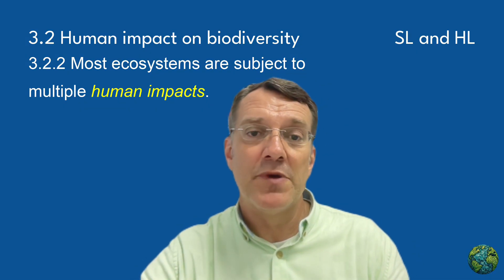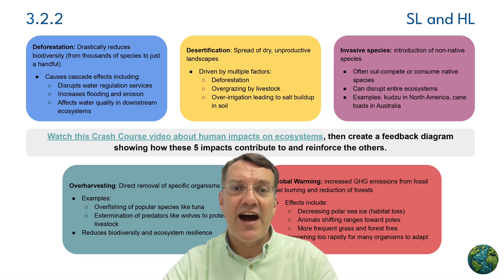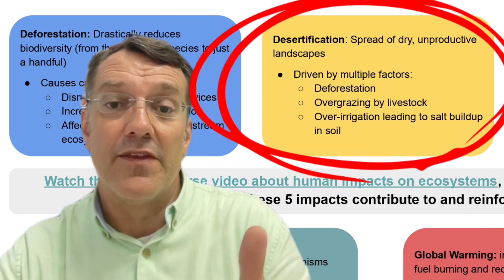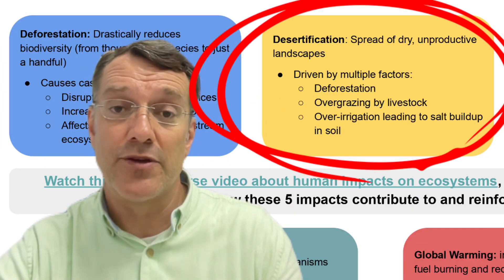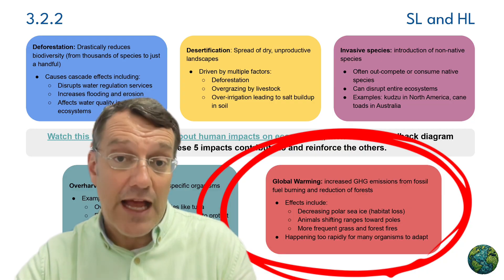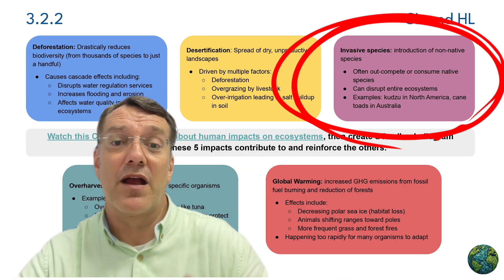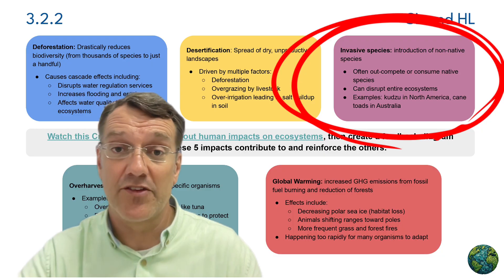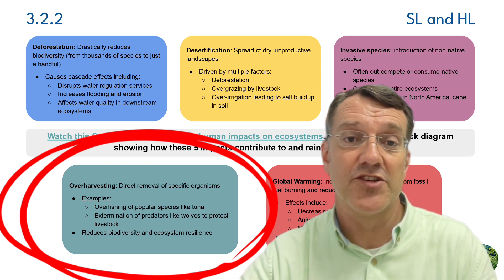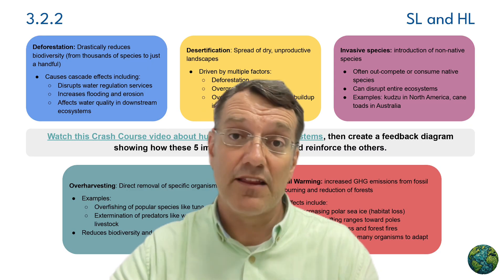Most ecosystems face multiple human impacts at the same time, and these pressures interact and amplify each other's effects. Deforestation drastically reduces biodiversity and disrupts water regulation services, contributing to desertification — the spread of dry, unproductive landscapes driven by deforestation, overgrazing, and poor irrigation practices. Climate change from human activities accelerates these processes and creates conditions where invasive species can thrive. As ecologically productive land becomes more stressed, over-harvesting removes key species from ecosystems, further reducing resilience. All these impacts reinforce one another, creating positive feedback loops that accelerate biodiversity loss.